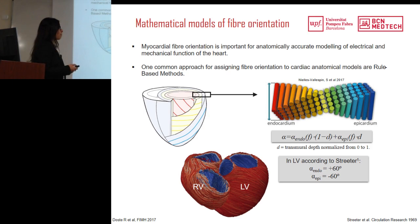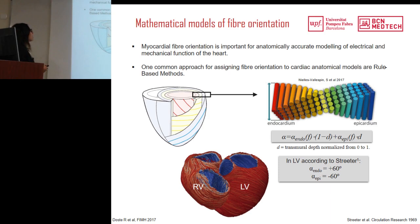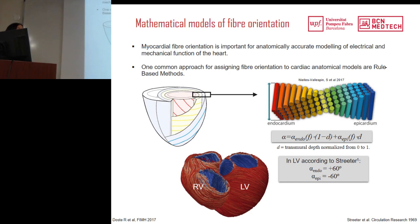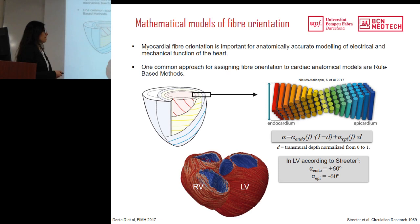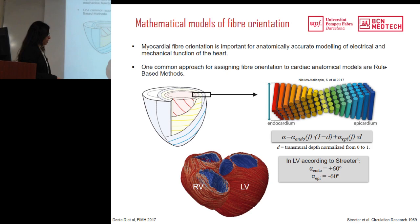Regarding fiber orientation, one common approach used by most models is rule-based models. Myocardial fiber orientation is important for anatomically accurate modeling of the electrical and mechanical function of the heart. These models define the change in analytical fiber angle by applying equations, originally extracted from measuring fiber orientation in histological images. One of the most used studies is Streeter's from 1969, who measured fiber orientation in dog hearts. Basically, the angle in the endocardium is defined as plus 60 degrees and the epicardium as minus 60 degrees, changing gradually transmurally.